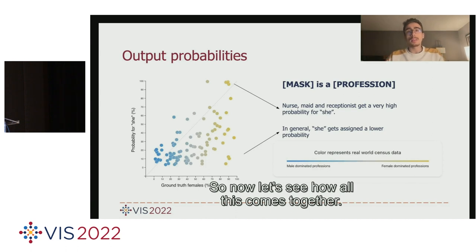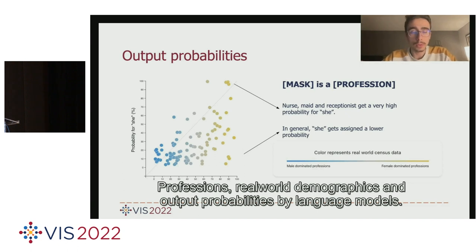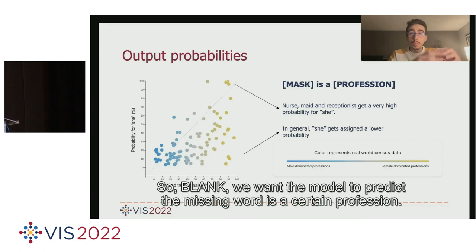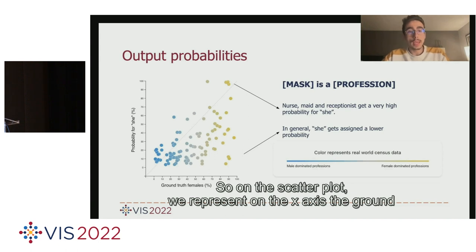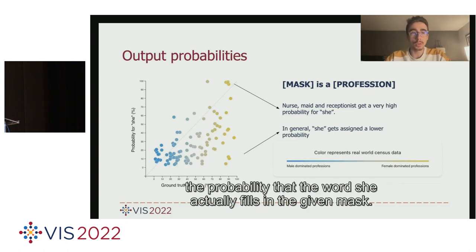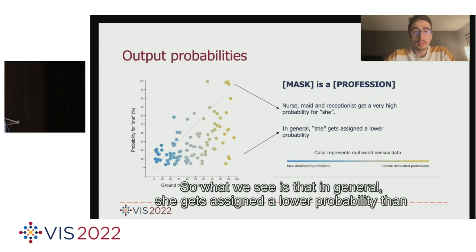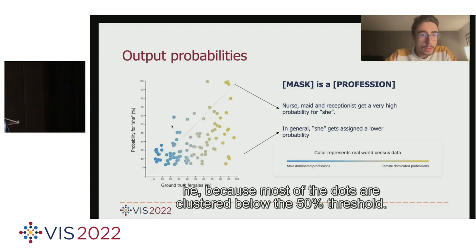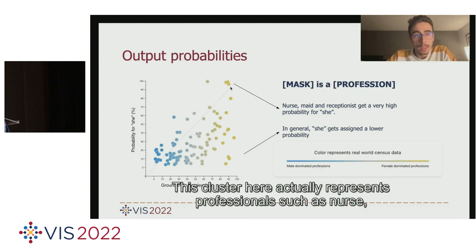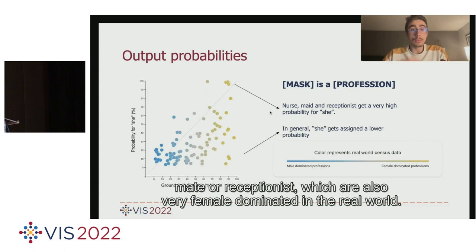Let's see how professions, real-world demographics, and output probabilities by language models all come together. Our sentences are of the shape 'blank is a certain profession.' On the scatter plot, the x-axis shows the ground truth percentage of females in the real world working in a given profession, and the y-axis shows the probability that 'she' fills in the mask. In general, 'she' gets assigned a lower probability than 'he' — most dots cluster below the 50% threshold. However, some professions like nurse, mate, and receptionist get very high probabilities for 'she,' and are also very female-dominated in the real world.